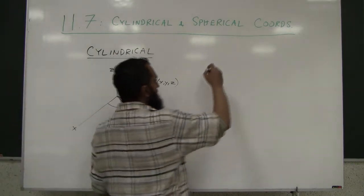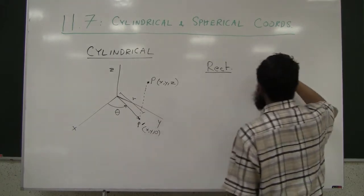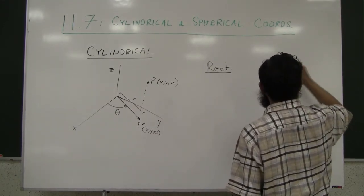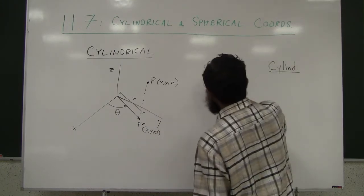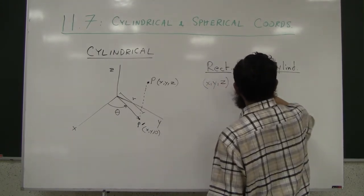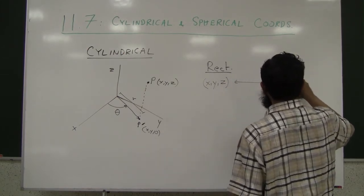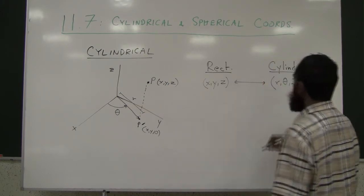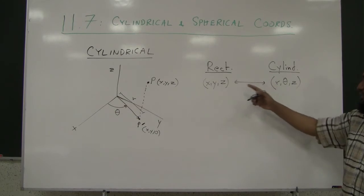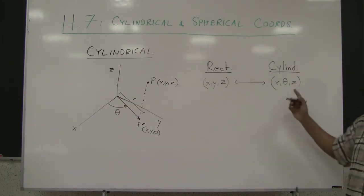So what happens is, this is your rectangular system, and this is your cylindrical system. Point XYZ becomes R theta Z. The Z, the height from the floor is kept the same, but then the other two things are expressed by R and theta.